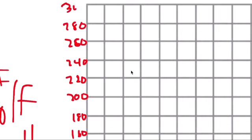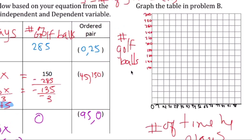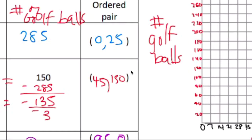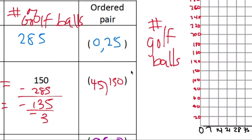And 300. 285 is our largest number, so the first ordered pair, it's not (0, 25), it's (0, 285). So (0, 285).